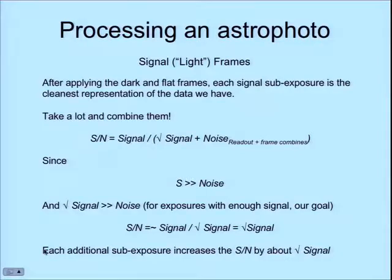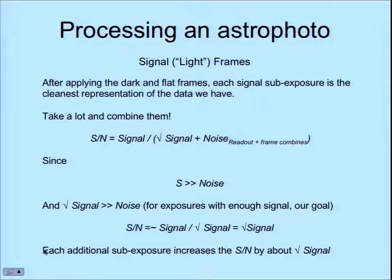Signal frames are just the frames of the actual image you're taking. The basic story is that signal adds linearly and noise adds with the square root, so if you keep stacking more exposures, you keep gaining signal-to-noise. One technique that helps is dithering — moving the telescope very slightly between exposures so that when you combine frames, any correlated noise from the sensor gets averaged away. A funny spot on the sensor that's more or less sensitive will be smashed down when you align and stack dithered frames. The takeaway: take a lot of exposures, stack them all up, and you'll get a smoother image with higher signal to noise.